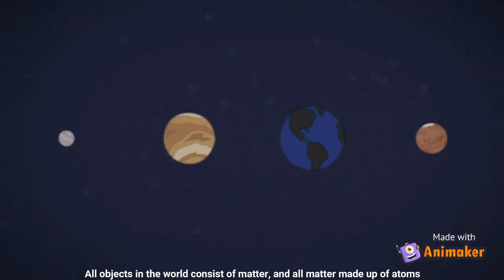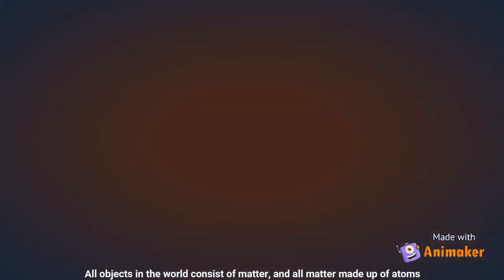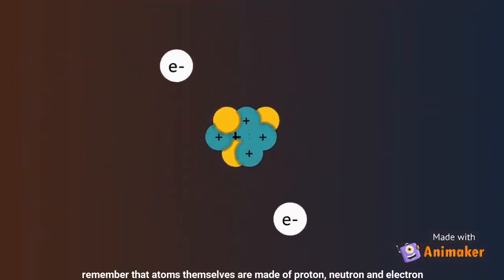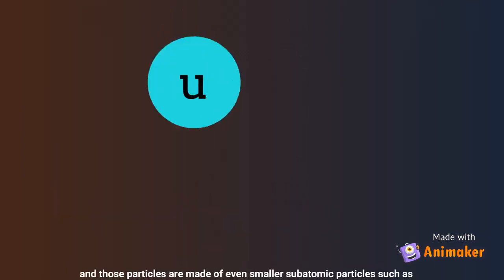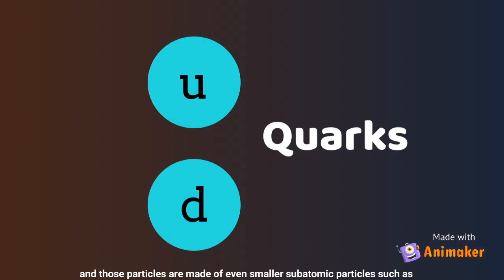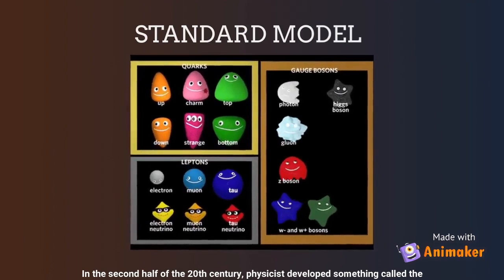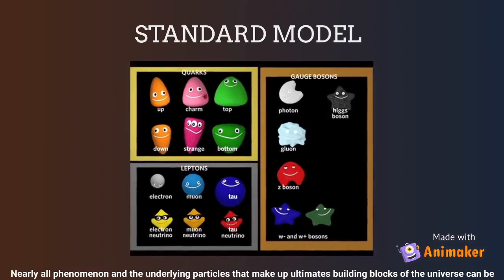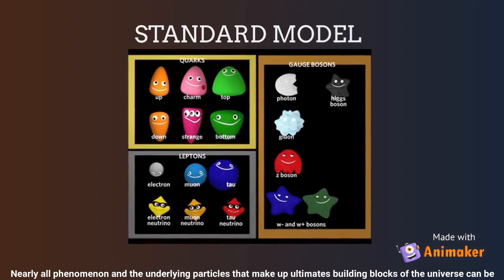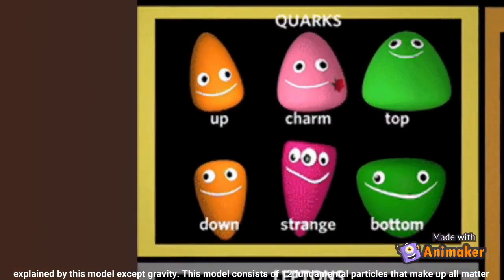Everything in the world consists of matter, and all matter is made up of atoms. Remember that atoms themselves are made of protons, neutrons, and electrons. And those particles are made of even smaller subatomic particles such as quarks. In the second half of the 20th century, physicists developed something called the Standard Model of particle physics.